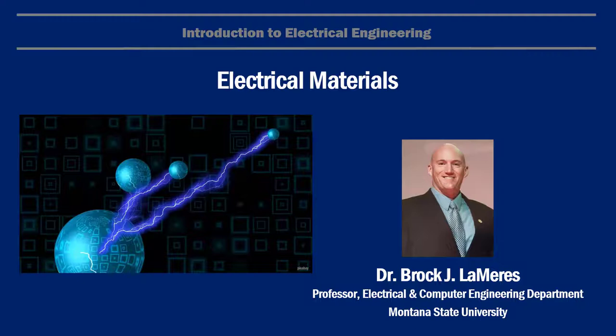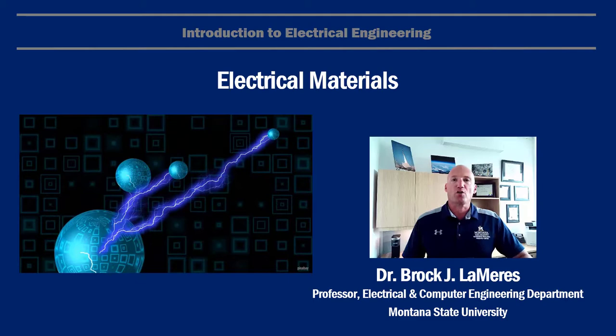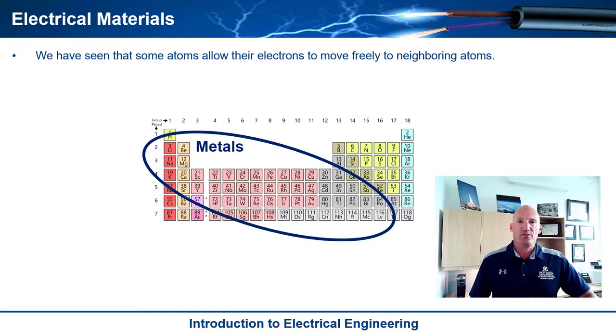Hey, this is Brock Lemires, and in this video I'm going to describe some basics about electrical materials. We've kind of seen already that when you look at all the materials and elements available to us on Earth, there are some atoms that allow their electrons to move freely to neighboring atoms. We tend to call these the metals.